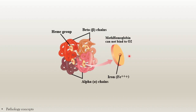Next is methemoglobin. When the iron of hemoglobin is oxidized from the ferrous state (Fe2+) to the ferric state (Fe3+), it is called methemoglobin. The ferric ion is incapable of binding with oxygen and cannot transport O2. Increased levels of methemoglobin result in functional anemia and a life-threatening event. Methemoglobinemia occurs secondary to toxic exposures where cytochrome B5 reductase's ability to reduce ferric ion is markedly reduced.